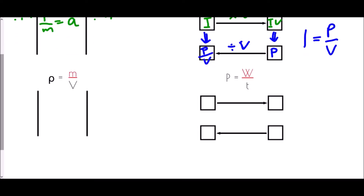This time we have ρ = m/v and we want to make m the subject. m is currently being divided by v, so to undo that we multiply by v on both sides. Multiplying ρ by v gives ρv, and multiplying m/v by v leaves just m. So m = ρv, and we've made m the subject of the formula.